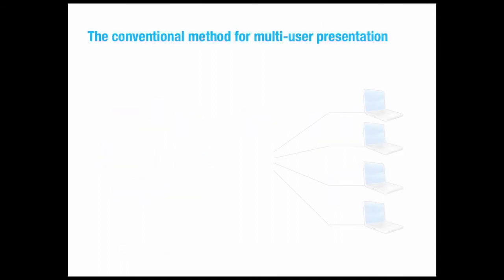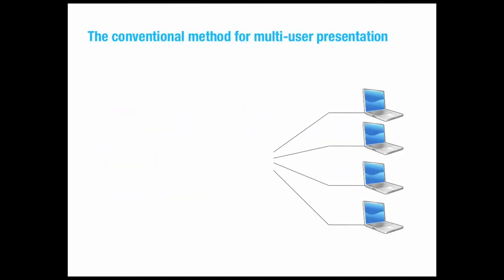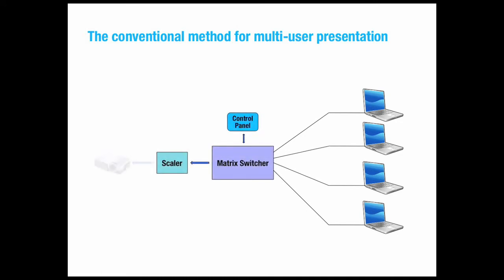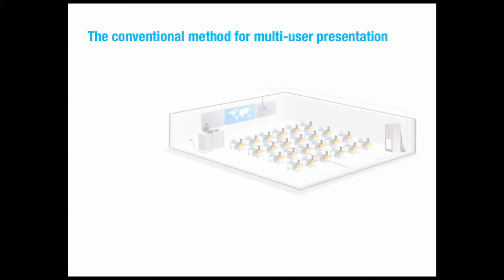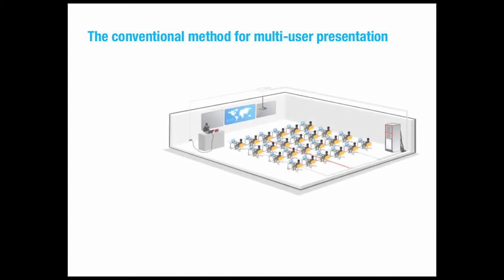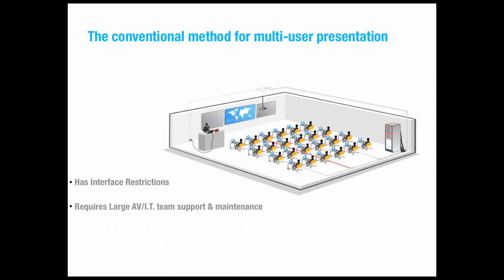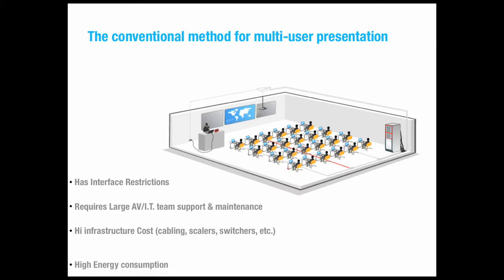The conventional method for seamless switching between multiple computers to a common display requires lots of VGA cables, matrix switchers, video scalers, control panels, etc. The conventional method also has interface restrictions, often requires extensive AV/IT team support, has high infrastructure costs, and consumes a lot of energy.